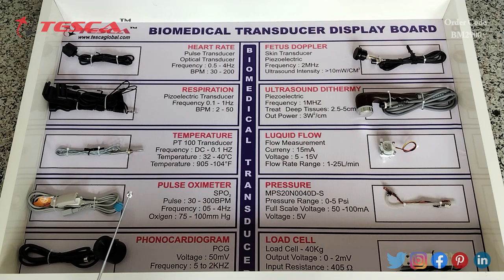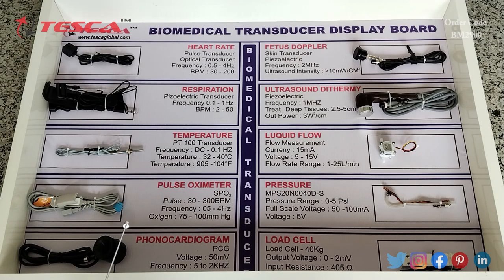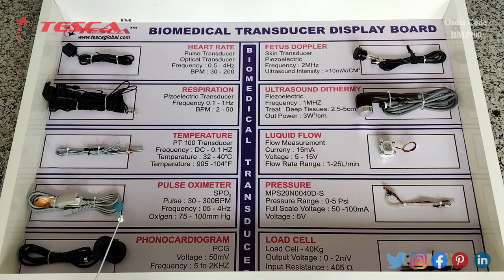Then this is the pulse oximeter transducer. Its pulse range is 30 to 300 BPM. Its frequency range is 0.5 to 4 hertz. Its oxygen range is 75 to 100 mm Hg.